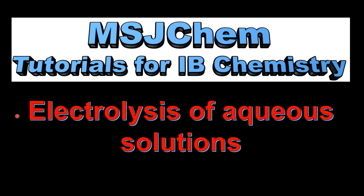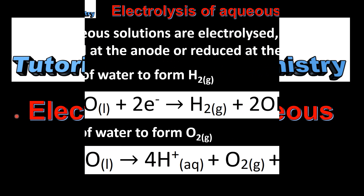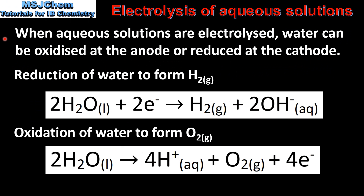This is MSJChem. In this video I'll be looking at the electrolysis of aqueous solutions. When aqueous solutions are electrolyzed, water can be oxidized at the anode or reduced at the cathode. Here we have the equations for the reduction of water to form hydrogen gas and the oxidation of water to form oxygen gas.